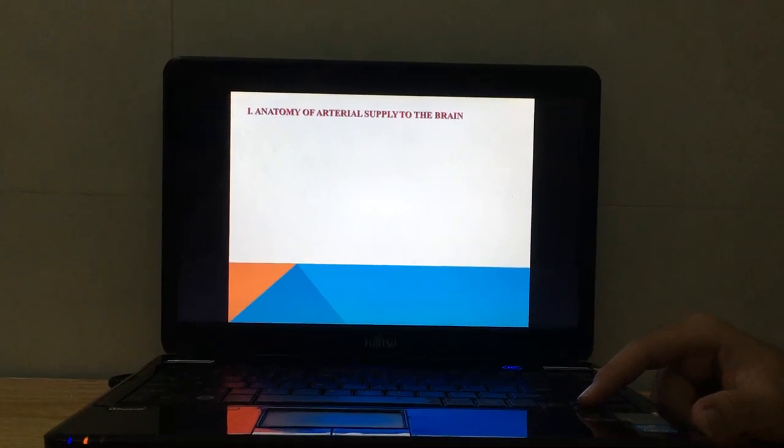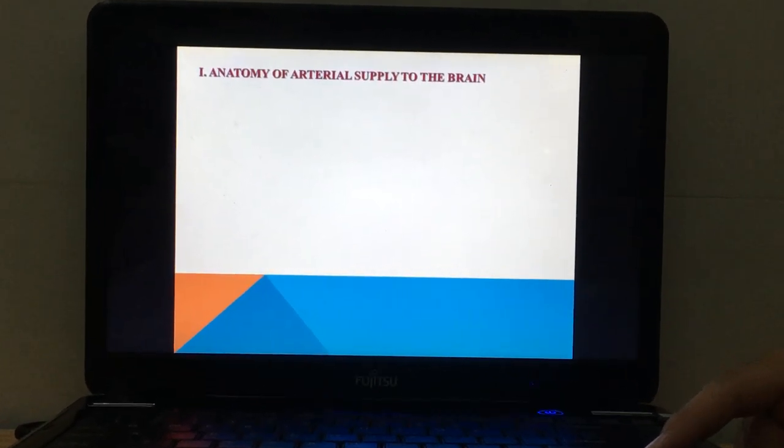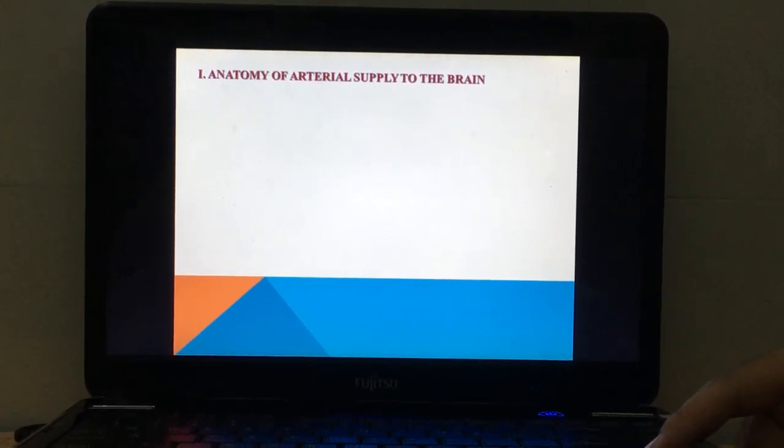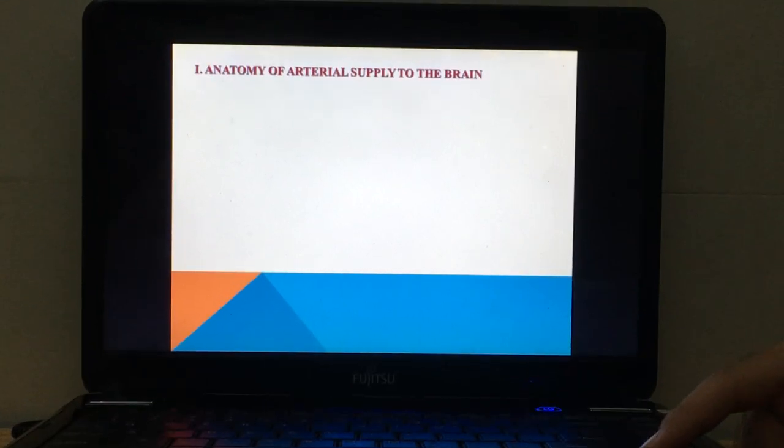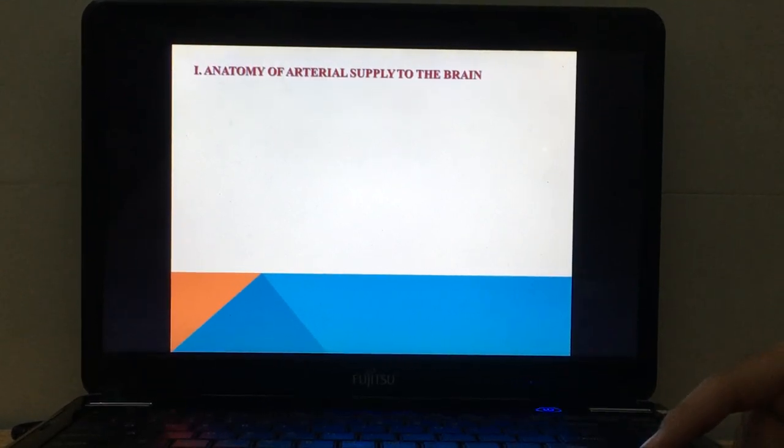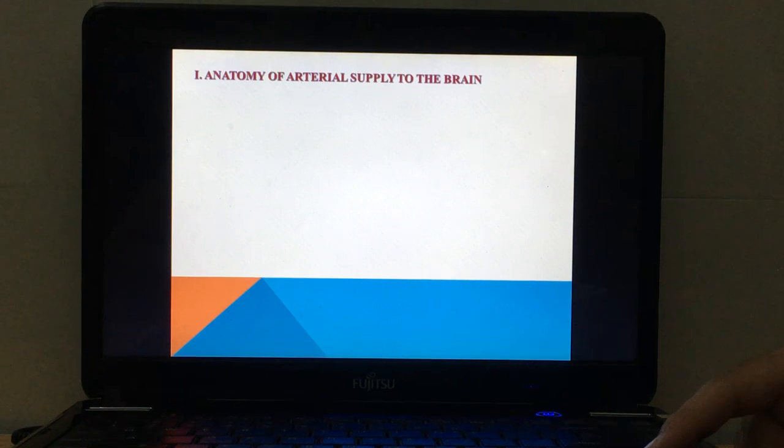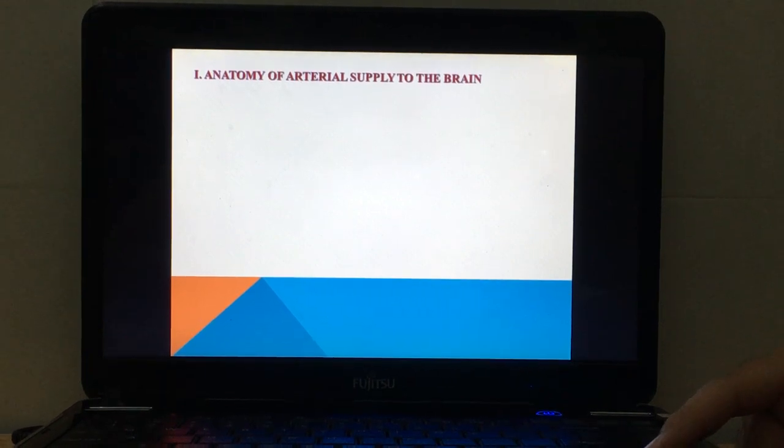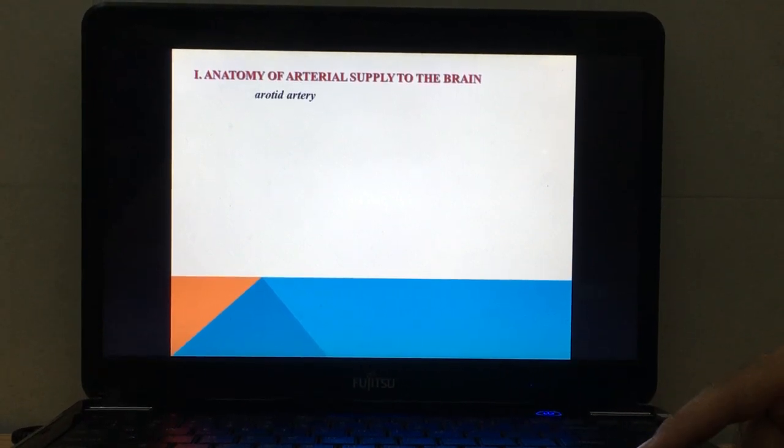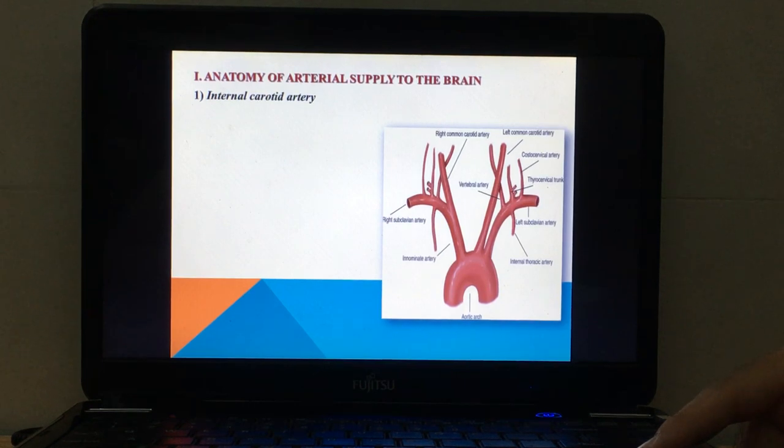First, I will recall the anatomy of arterial supply to the brain. The arterial supply to the brain is derived from the paired internal carotid and paired vertebral arteries. First, we review the internal carotid artery. As you can see here...